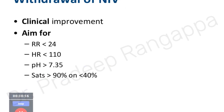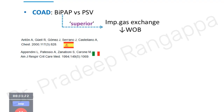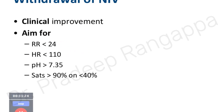Weaning from NIV: wean when there is good clinical improvement — ABGs improved, tachypnea resolved, heart rate normalized, pH improved, maintaining good saturation above 90% on FiO2 of 40% or less. When these criteria are met, slowly wean off NIV and transition to mask oxygen. That covers the basic concepts of NIV.